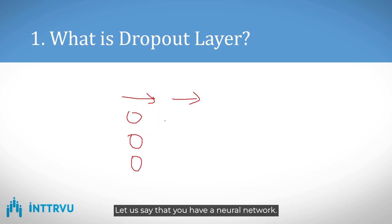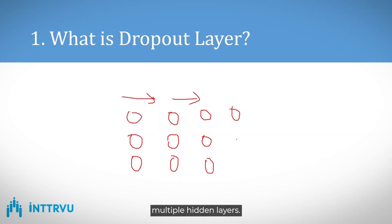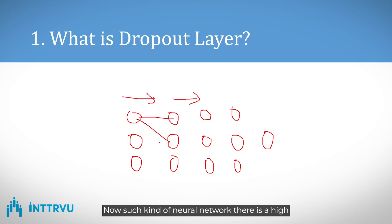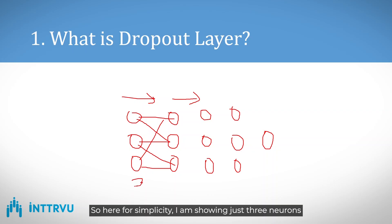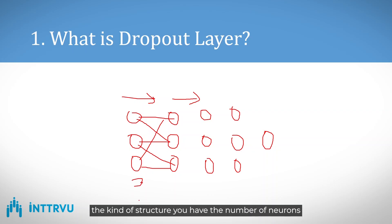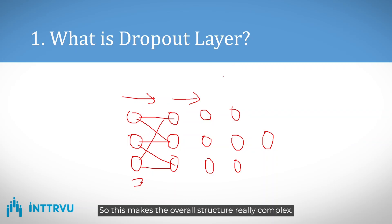Consider a neural network with multiple hidden layers — such a network has a high chance of suffering from overfitting. For simplicity, I'm showing just three neurons, but typically you can have 100, 200, or 50 depending on the structure. This makes the overall structure really complex, and to avoid overfitting, a dropout layer is used.